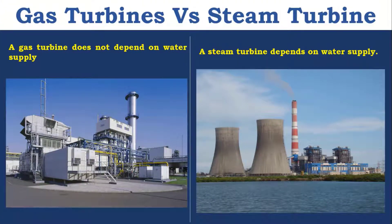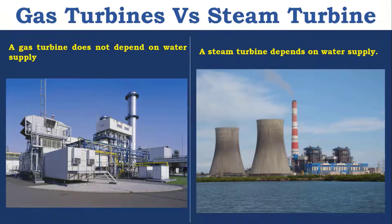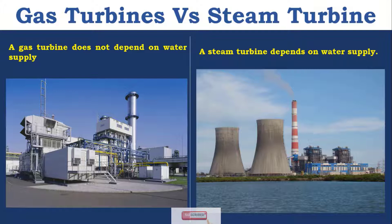The Gas Turbine does not depend on water supply, because we do not need to cool anything and the working medium is Gas. Whereas Steam Turbine depends on water supply. If you go for an open system, we need to replace water continuously to the boiler. If it is a closed system, we have a condenser, and to cool the condenser, we need water. That's why Steam Turbine depends on water supply, whereas Gas Turbine does not.